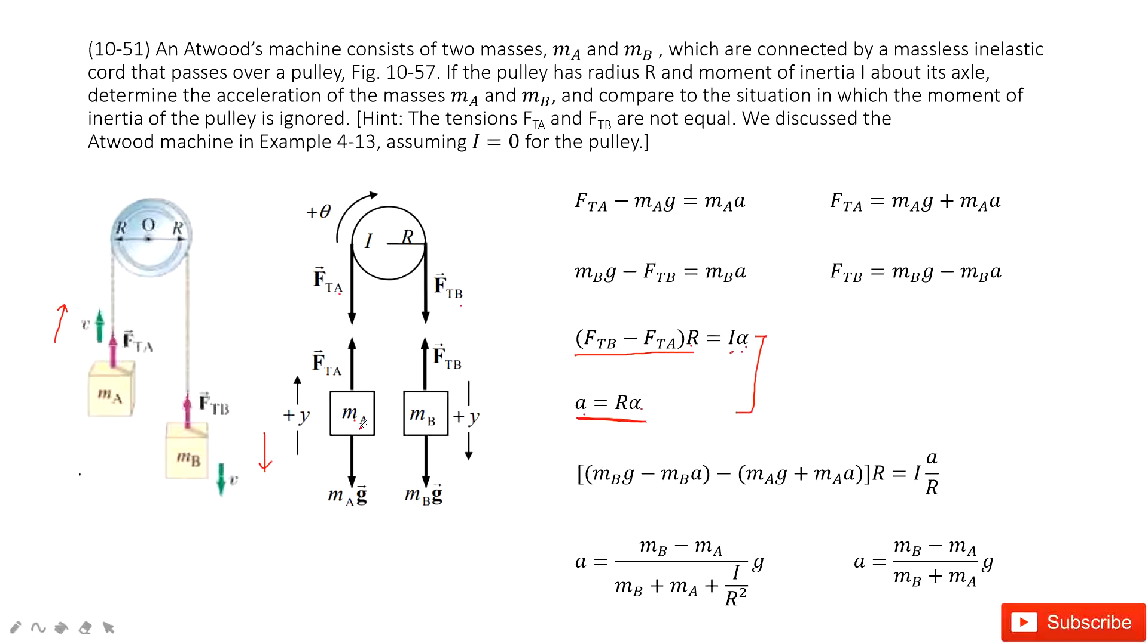First one, we look at object A. We apply Newton's second law. See, the net force for object A, FTA minus MAg equal to mass times acceleration. In this way, we get the FTA.